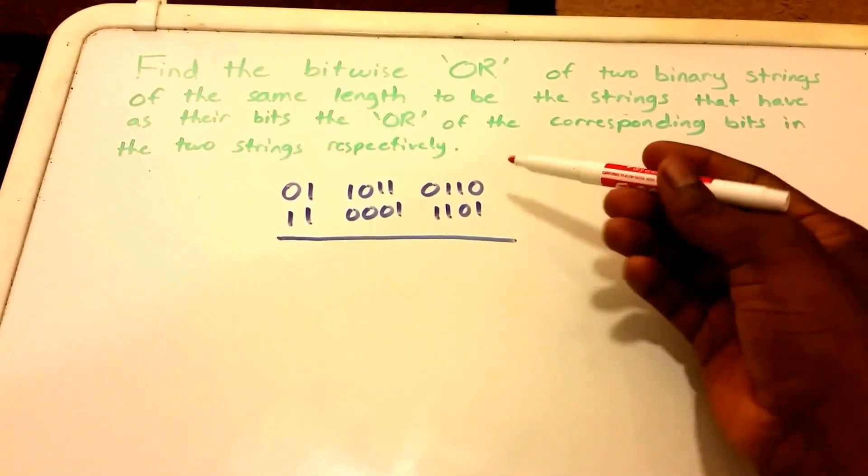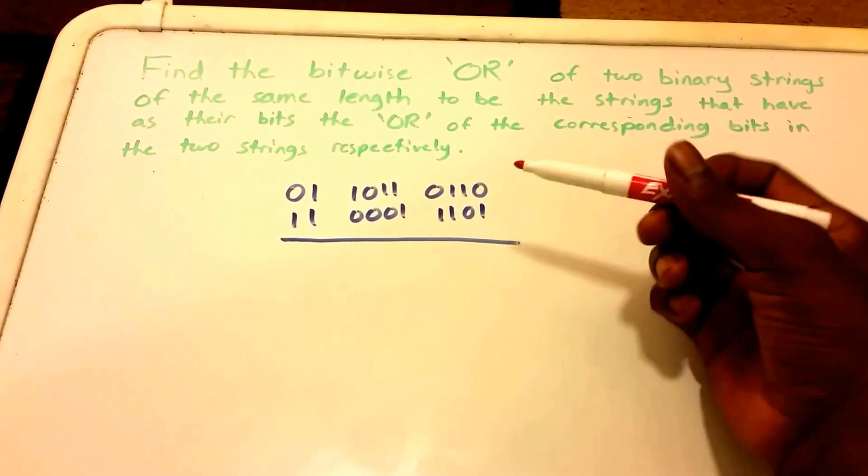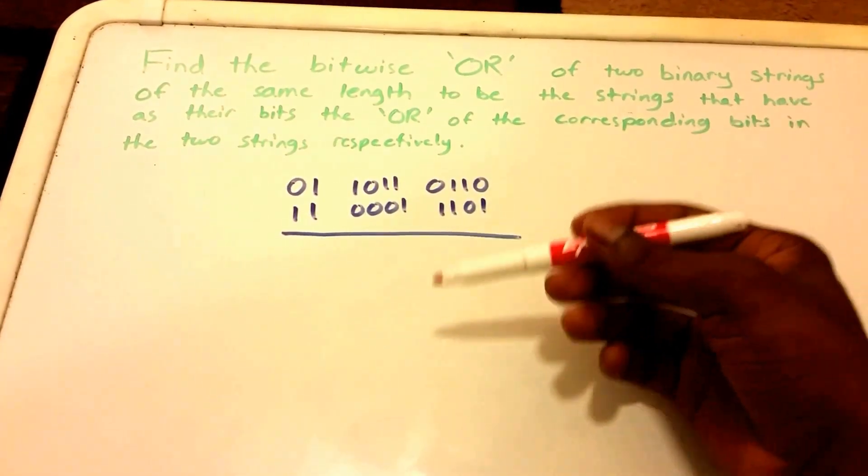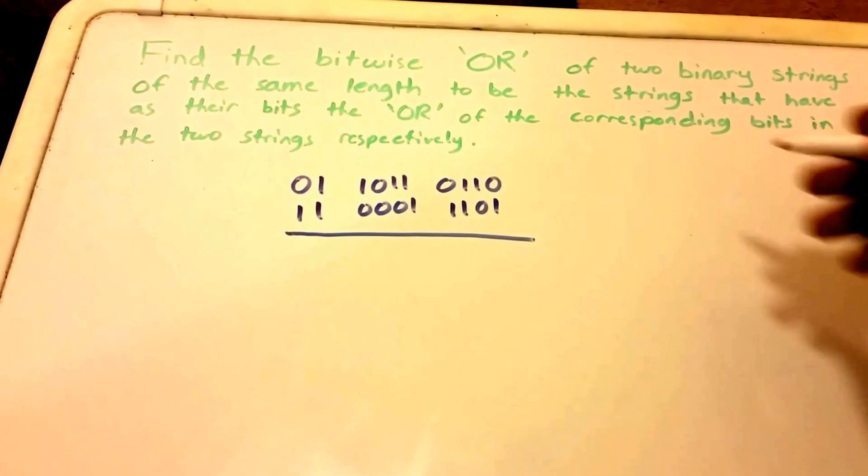So here I have the two binary strings and we want to get the bitwise OR of these two strings. So how do we do it?